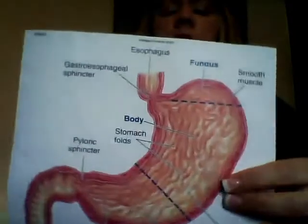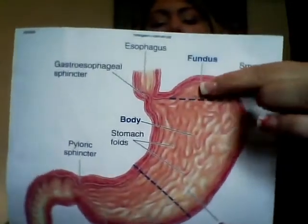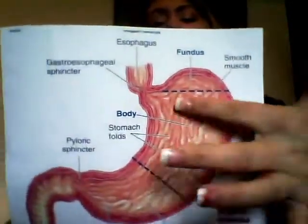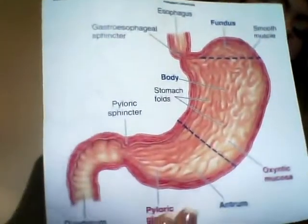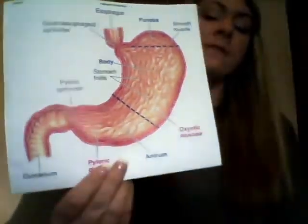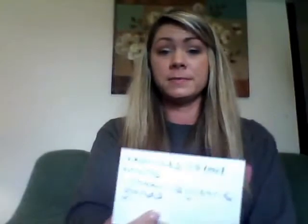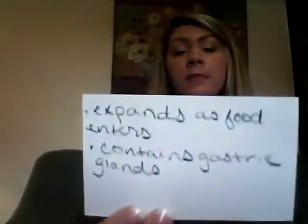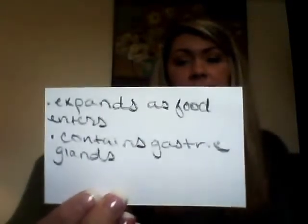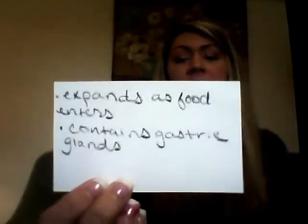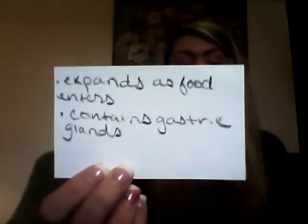Then we have the fundus and body of the monogastric stomach. The fundus and body serve the same purpose: they expand as food enters the stomach and they contain gastric glands.